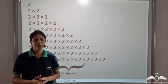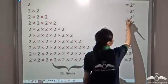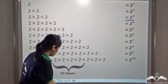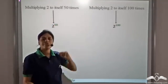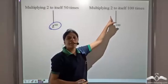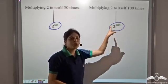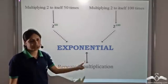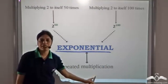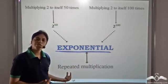So mathematicians came up with a shorthand notation for such large numbers. Two multiplied with itself three times is written with three as a superscript of two. Similarly, two multiplied to itself fifty times is written with fifty as a superscript of two, and two multiplied to itself a hundred times is written with hundred as a superscript of two. Such numbers are called exponential numbers. So exponentials denote repeated multiplication, just like multiplication denotes repeated addition.